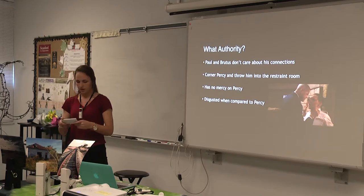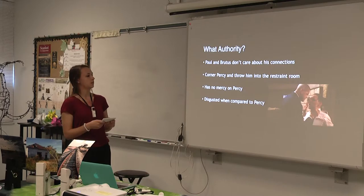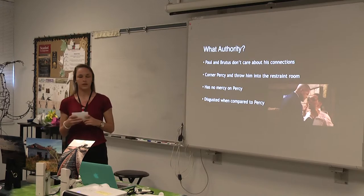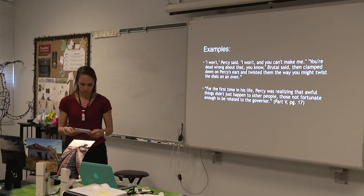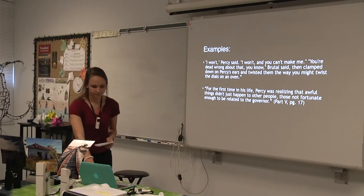Percy is weak and unarmed from his safety barriers when there is no one there to help him. Paul and Brutus don't care that he is related to the governor at this point — they corner Percy and force him into the restraint room anyway. Percy pleads, saying 'Please don't put me in there with him,' comparing Paul and Brutus to what he would have done in their position. These moments show how Percy's authority means nothing to Brutus and Paul; he is getting manhandled with nobody there to help him.